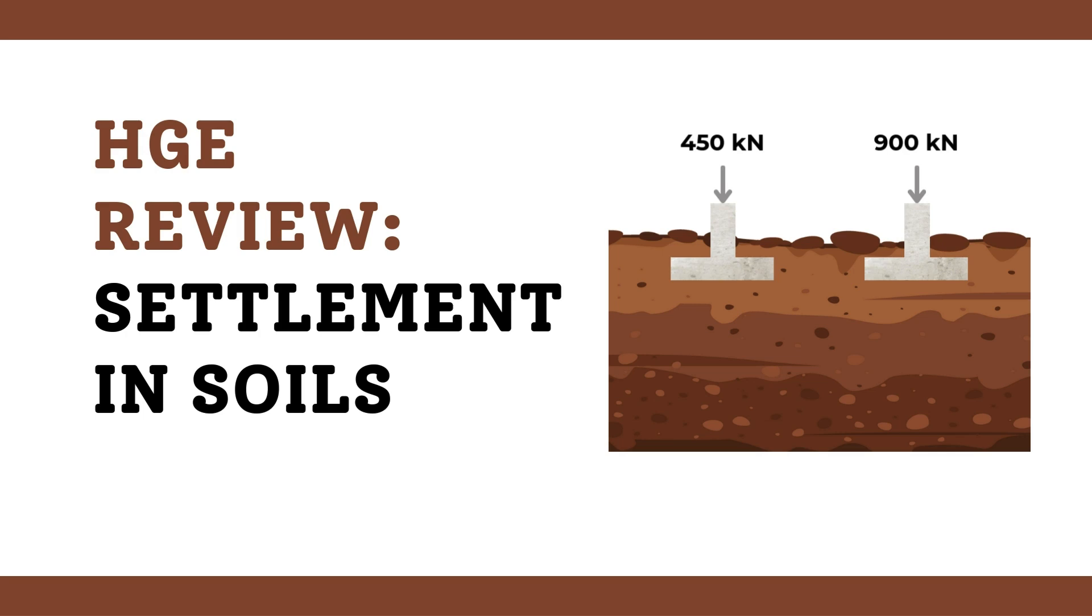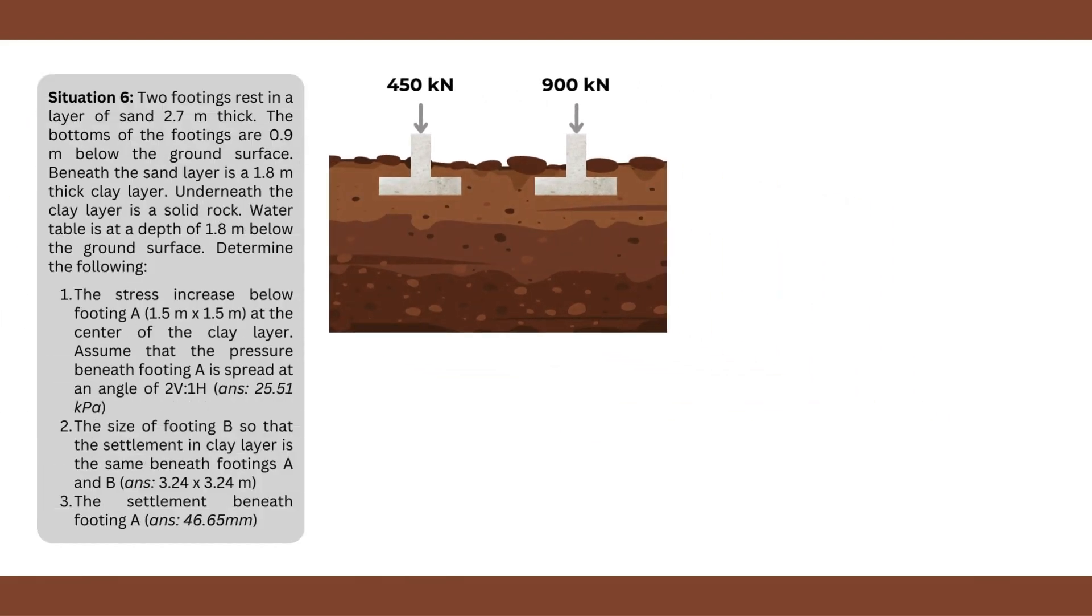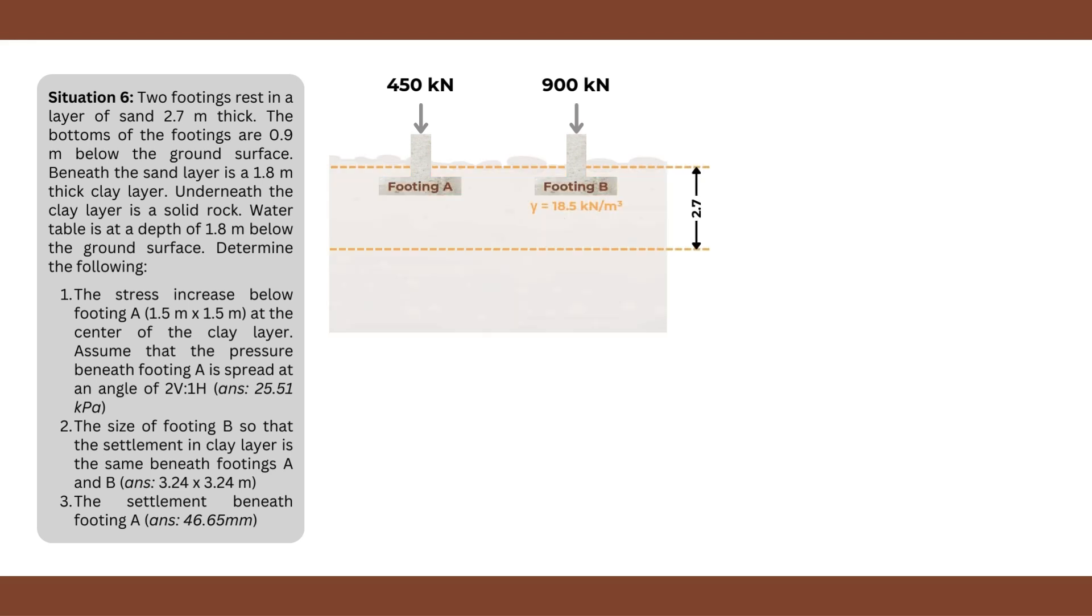Hello and welcome to another episode of my reviewer series for civil engineering topics focusing on geotechnical engineering problems. For today's situation, two footings rest in a layer of sand 2.7 meters thick. The bottoms of the footings are 0.9 meters below the ground surface, and beneath the sand layer is a 1.8 meter thick clay layer. Underneath the clay layer is solid rock and the water table is at the depth of 1.8 meters below the ground surface.